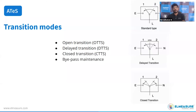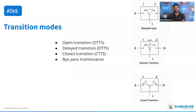We have four modes of transition: open transition (OTTS) in two-position and three-position solenoid ATS variants; delay transition, which is a three-position ATS similar to motorized ATS with source one, source two, and neutral position; and close transition ATS.